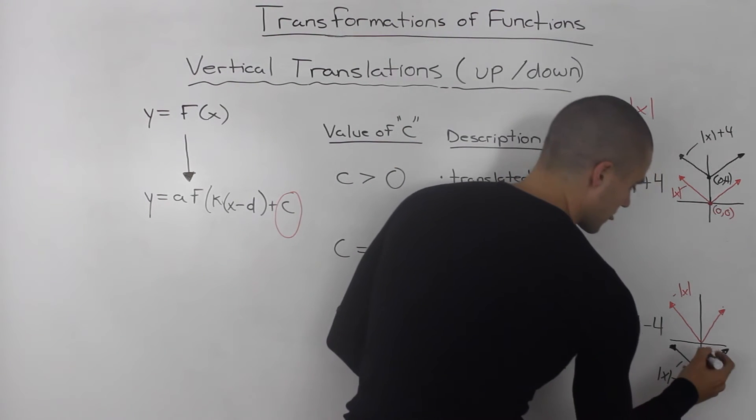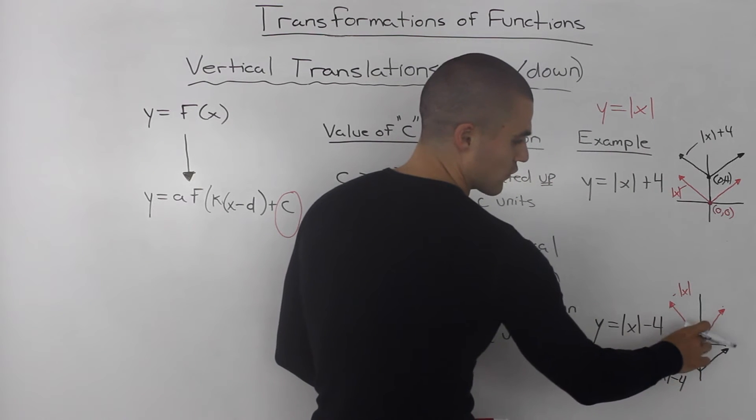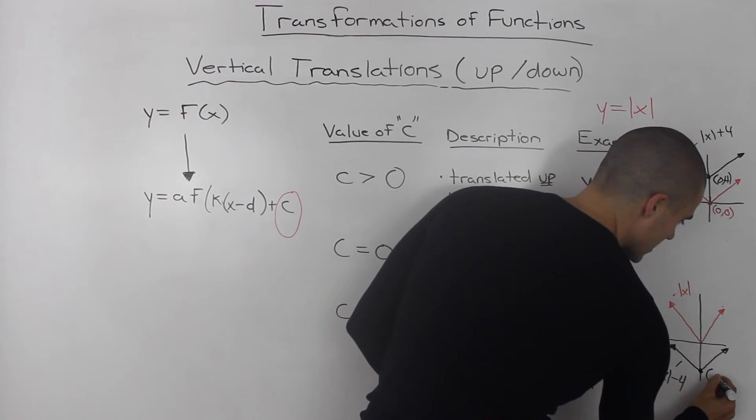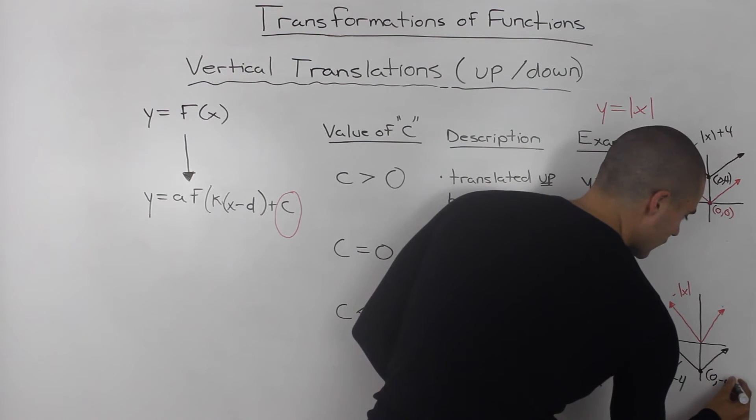The parent function has a vertex at zero and zero. The transformed function would have a vertex at zero and negative 4.